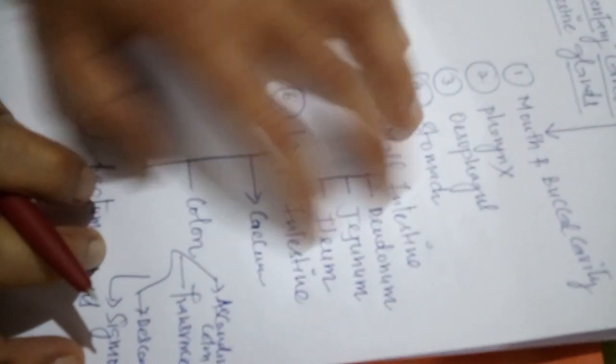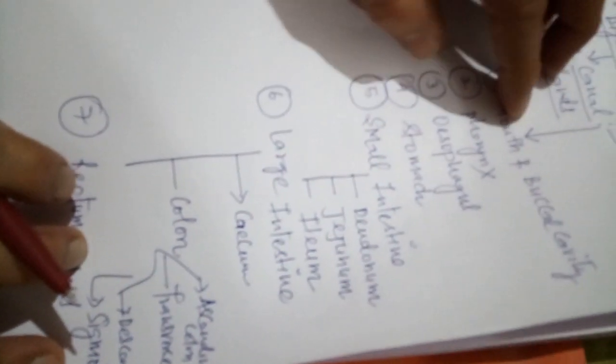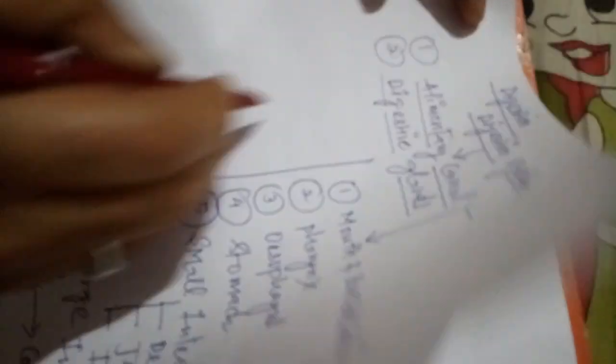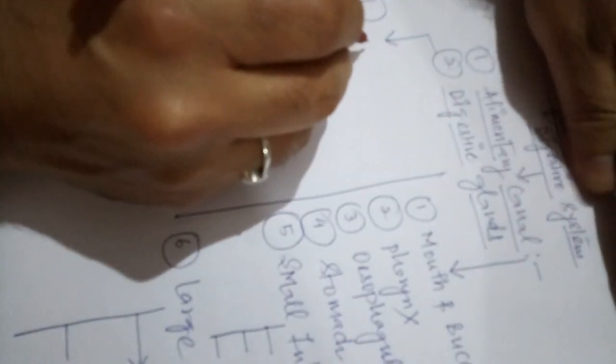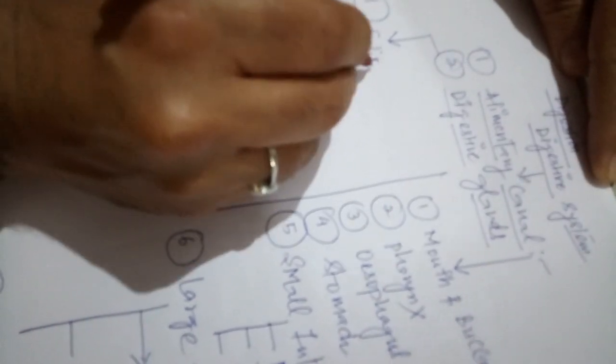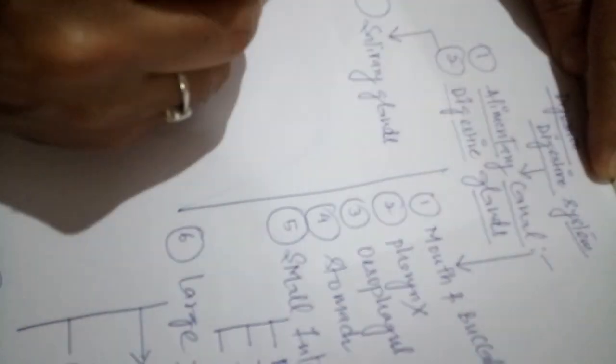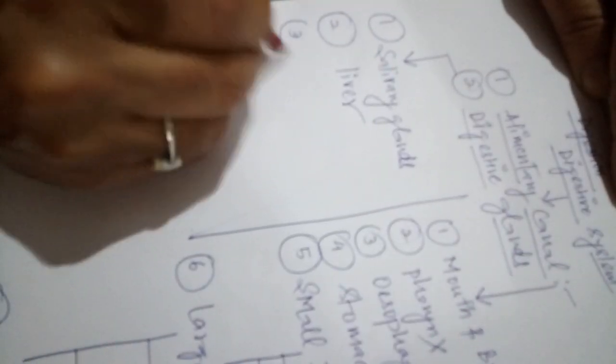These are the parts of the alimentary canal, which extends from mouth to anus. The digestive glands include three glands: first, salivary glands; number two, liver; number three, pancreas.